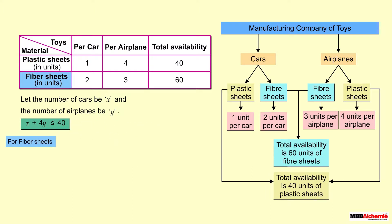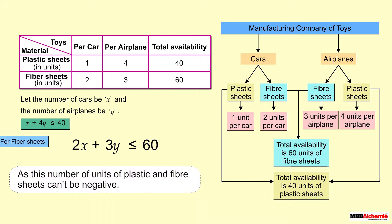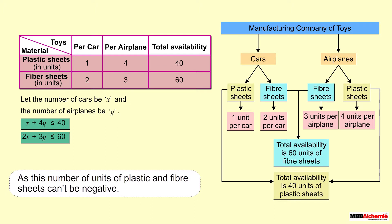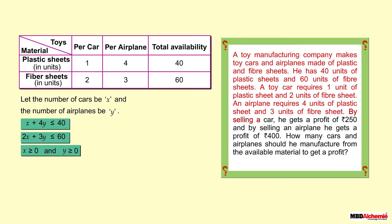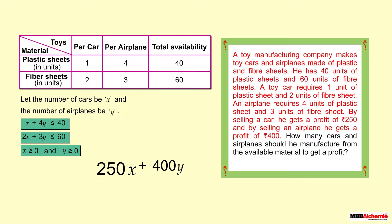Similarly, x cars require 2x units of fiber sheets and y airplanes require 3y units of fiber sheets, with only 60 units available, giving the inequality 2x + 3y ≤ 60. Since the number of units cannot be negative, two more inequalities are added: x ≥ 0 and y ≥ 0. As the company earns a profit of 250 rupees per car and 400 rupees per airplane, the objective function is Z = 250x + 400y.